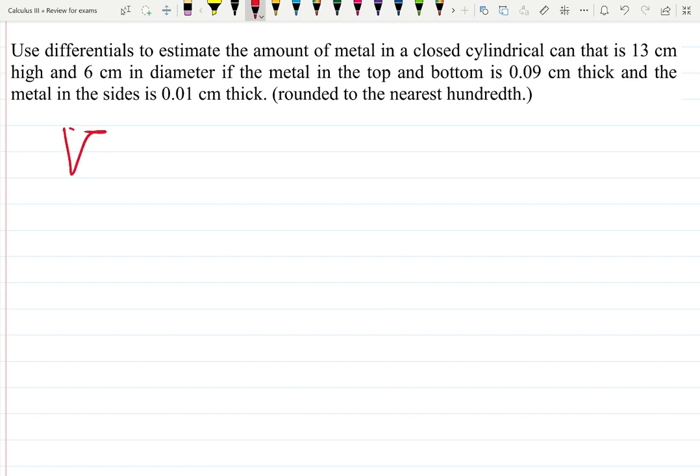Remember the formula for volume. The volume will be V = πr²h. That is the volume of the closed cylindrical can.